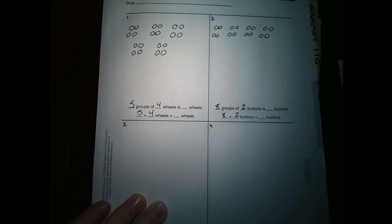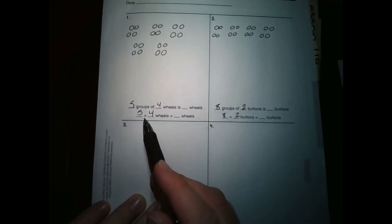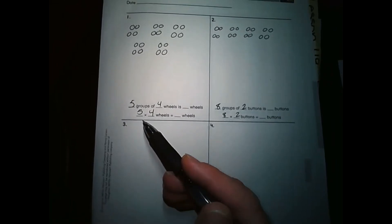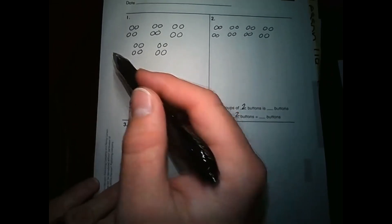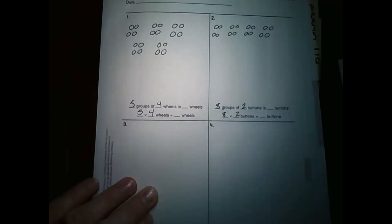Now, as a multiplication problem, it looks like this. But since we are still learning how to do multiplication problems, that's why we're going to write it out like this. What I would like everybody to do is take a moment and count how many wheels do I have. Out of my five groups of four, how many wheels do I have?